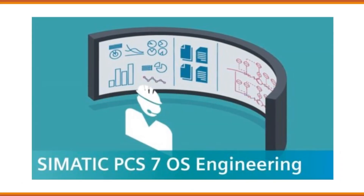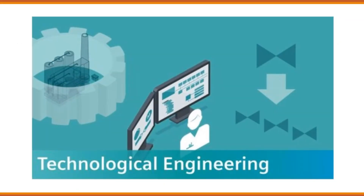PCS7 OS Engineering refers to the engineering and configuration of PCS7 systems. It involves tasks such as system design, hardware configuration, software programming, and network setup to create a customized and optimized automation solution for a specific industrial plant. This discipline also involves analyzing process requirements, creating control modules, connecting equipment modules and EPHDs, selecting appropriate equipment and technologies, and developing efficient and reliable process configurations.